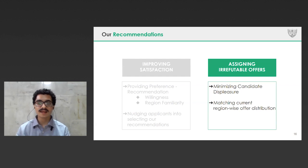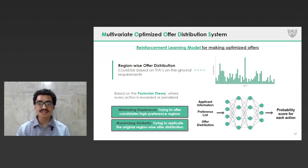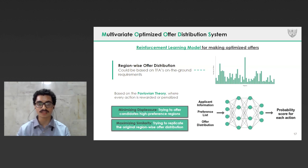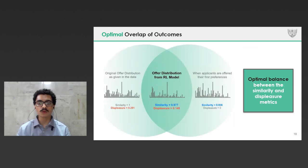After TFA is able to influence the candidate's preferences to ensure better satisfaction, the next priority is to use these preferences to make optimized offers. We are optimizing the offers based on two criteria: firstly, that applicants get as high preferences as possible, which would minimize the displeasure; and secondly, while making new offers, we do not want to make major changes to the current region-wise offer distribution, since this distribution might reflect TFA's ground-level requirements. For this task, we propose a neural network trained using reinforcement learning as an end-to-end solution, where we reward the network whenever it tries to match the current offer distribution and penalize it when it increases the displeasure among applicants. While training our model, it starts learning to take those actions which would minimize the displeasure while ensuring the new offer distribution is similar to what we expect. As a result of our RL model, we obtain an optimal balance with a significant decrease in the displeasure value for an almost similar offer distribution.